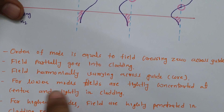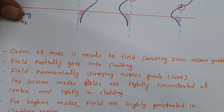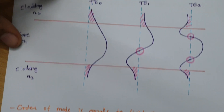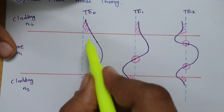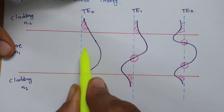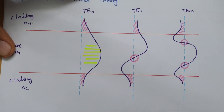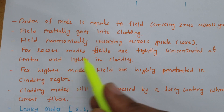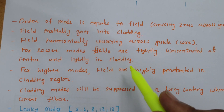For lower modes, the field is tightly concentrated at the center. When we talk about lower modes — meaning TE0 mode — the field is tightly concentrated at the center, as one can observe, and is present only lightly in the cladding.